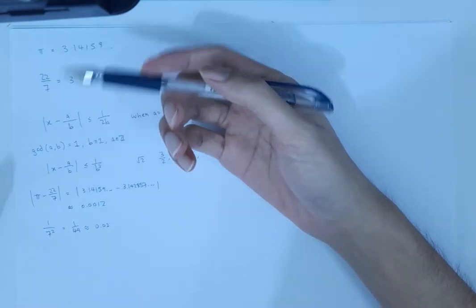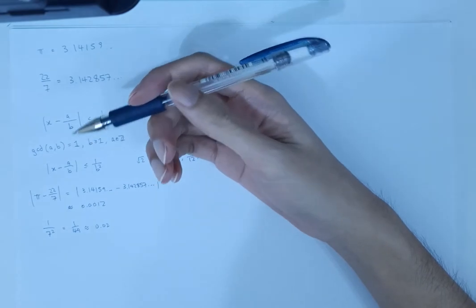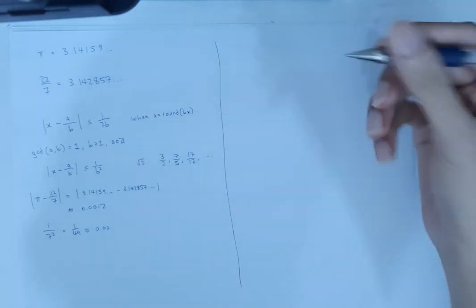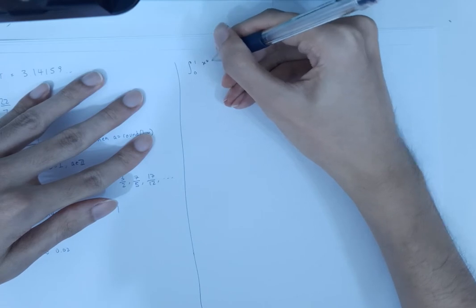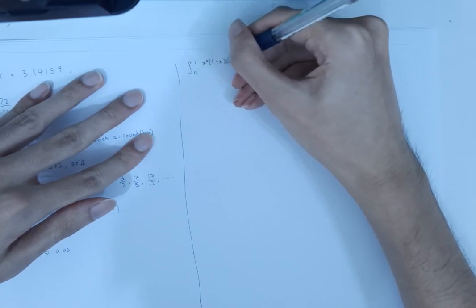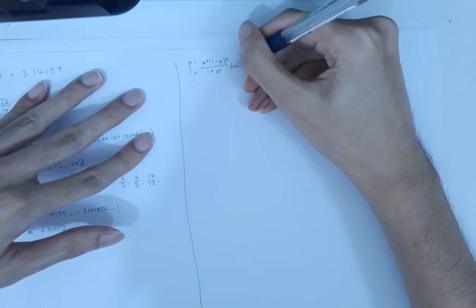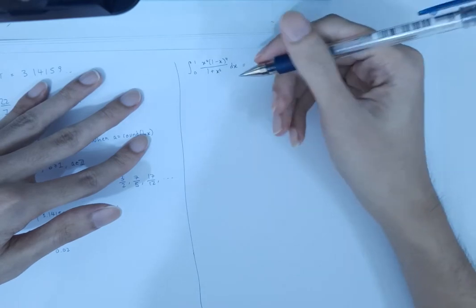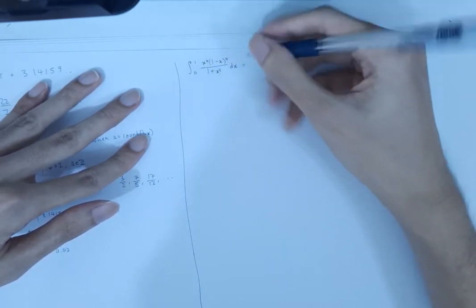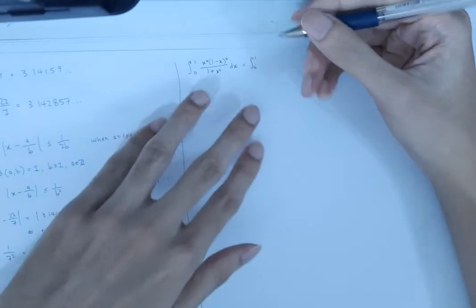But this relies on already knowing what the value of pi is. So for example, if we want to determine this from first principles, how would we do that? So consider the integral of this thing, x power 4 multiplied by 1 minus x bracket power 4 divided by 1 plus x squared dx. And we can just easily evaluate this by expanding the numerator and doing long division, this is very standard calculus stuff.